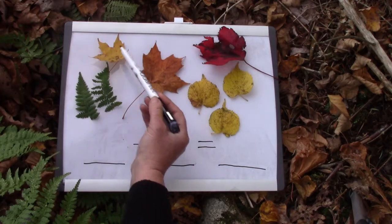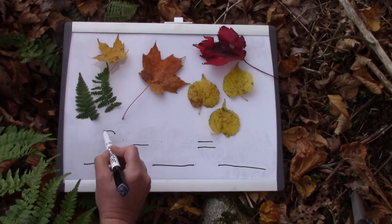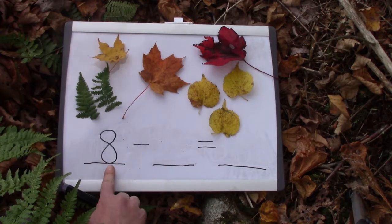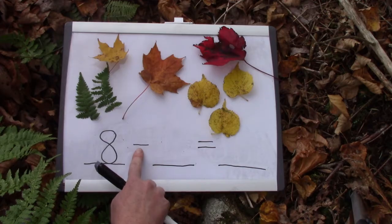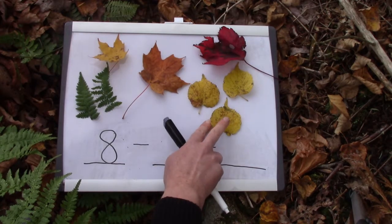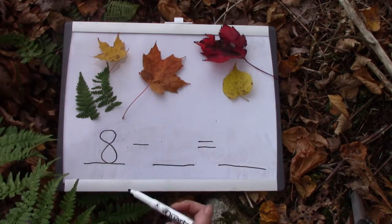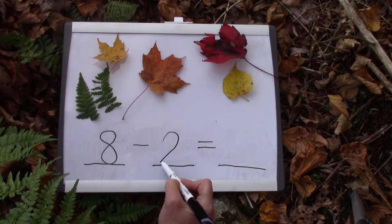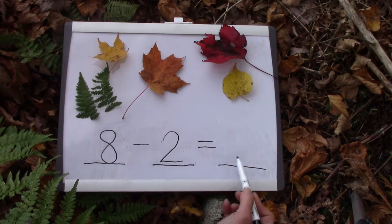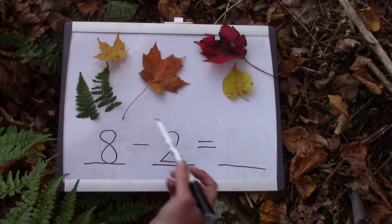We have one, two, three, four, five, six, seven, eight leaves. So we start off by saying we have eight leaves, and then we're going to take away one, two leaves. Eight take away two leaves equals... how many do we have left? Let's count them.